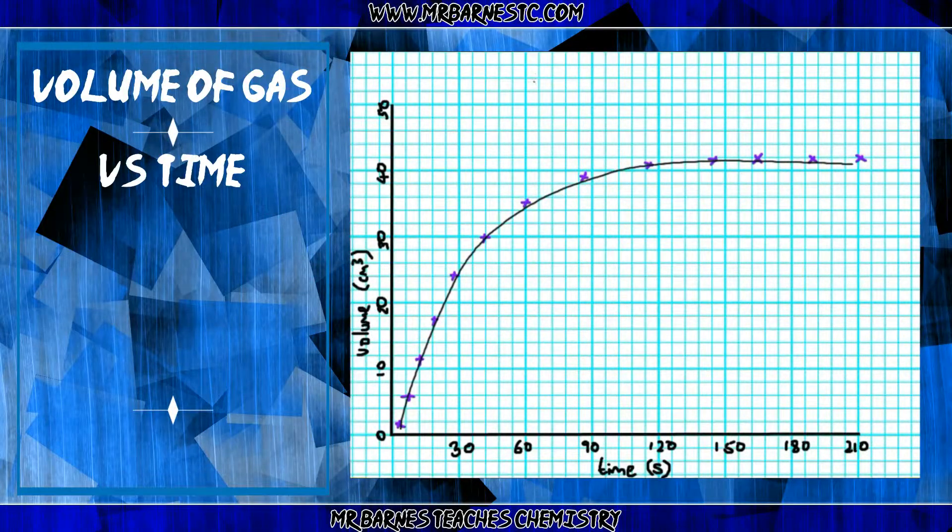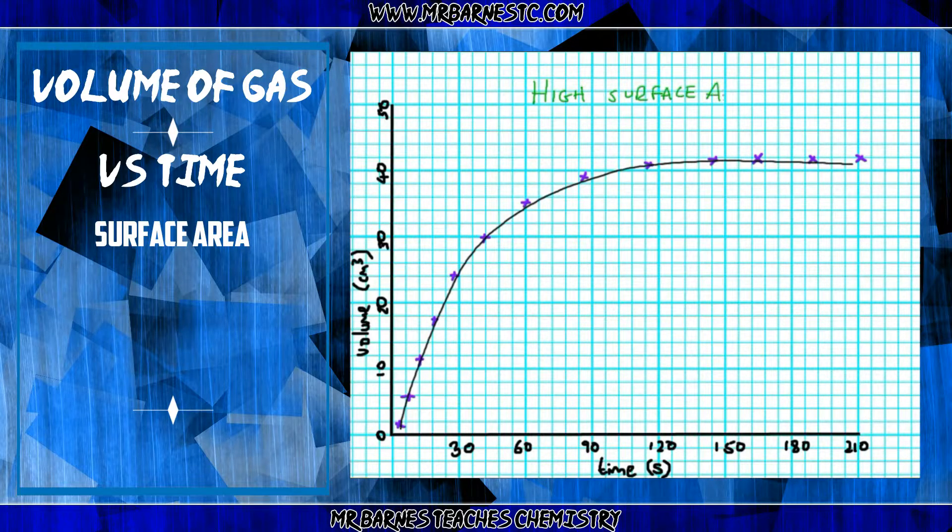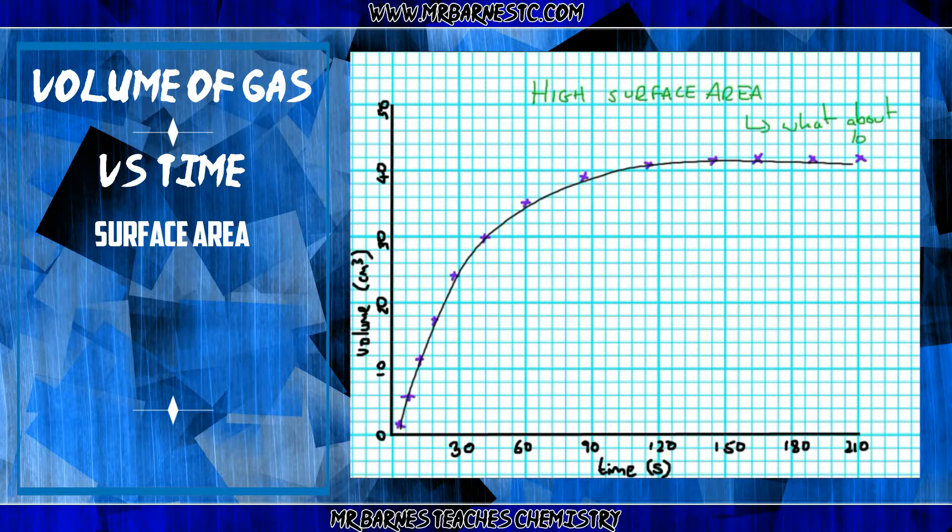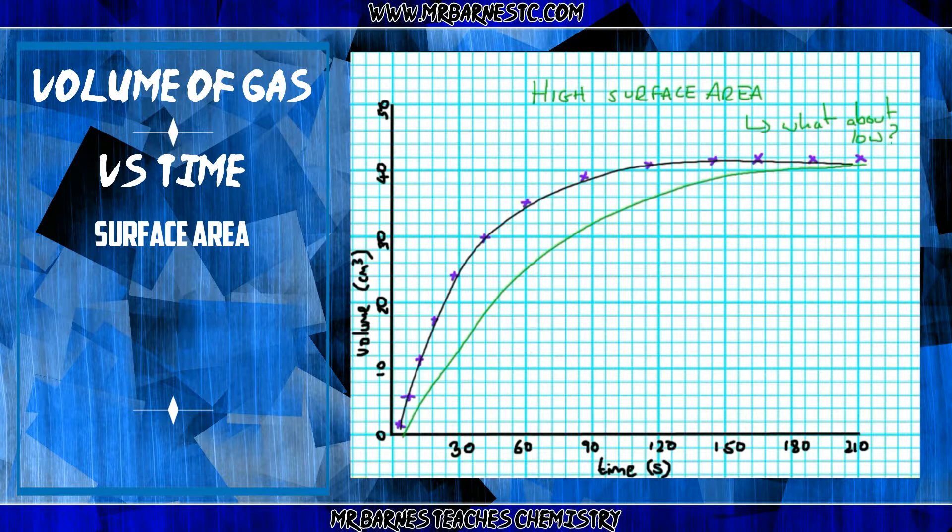So let's have a look at a graph looking at surface area. So here I've got one with a high surface area, and it might ask you in exam to sketch a graph to show a low surface area. Now if it's a low surface area, therefore it means that there are going to be less collisions per second, therefore the rate of reaction is going to be lower.